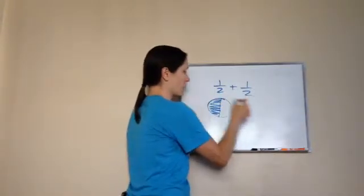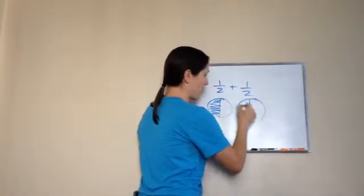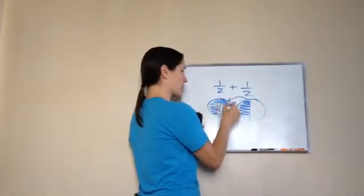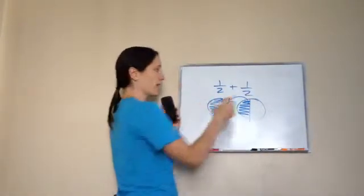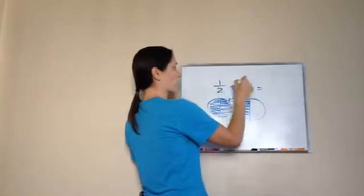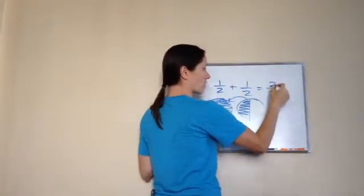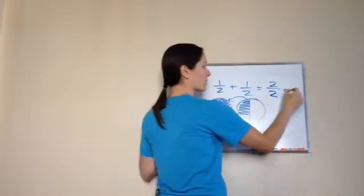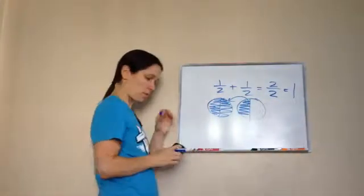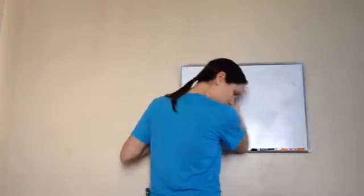That would be one half, one half, which let's bring this over, which would make one whole, but let's do it the mathematical way. One plus one is two, and then you slide the two over. Two out of two is one whole. So, you got it? You understand it?